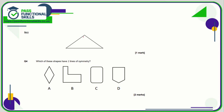Shape 3c looks like an isosceles triangle — it has only one line of symmetry, down the middle. Question four: which shapes have two lines of symmetry? Shape a has two, shape b has none, shape d has only one, and shape c also has two. So the answer is a and c.